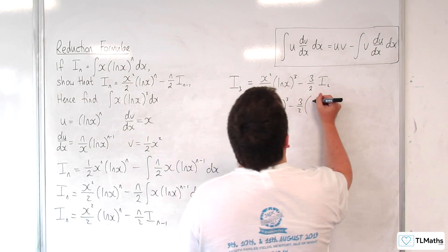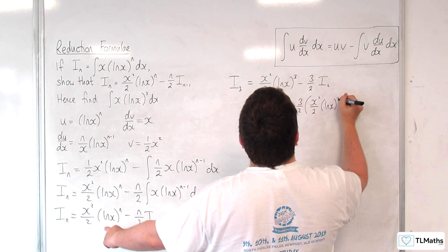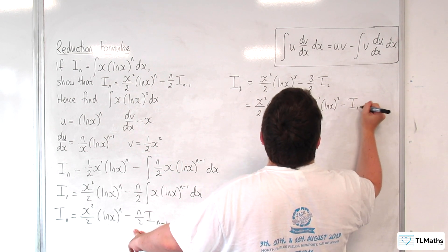x squared over 2 log of x squared, take away 2 over 2, so 1 lot of i_1.